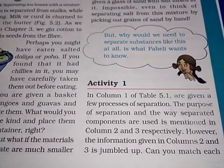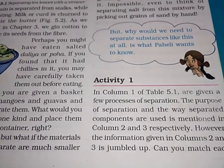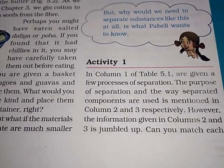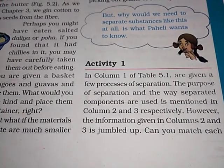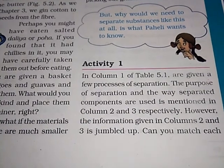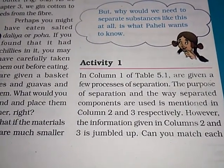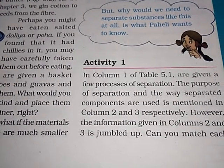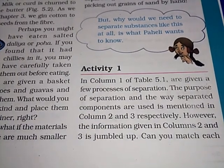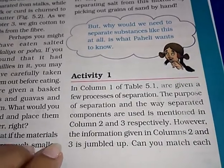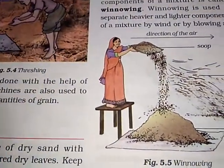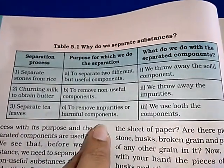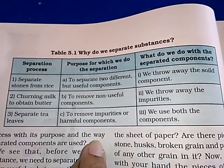But why is it necessary that we have to separate substances? In Table 5.1, column one lists a few processes of separation. The purpose of separation and the way the separated components are used are mentioned in columns two and three respectively, but those columns are jumbled up. You have to match them correctly.